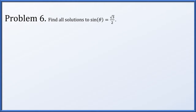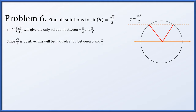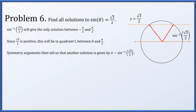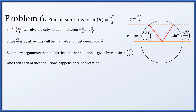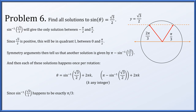In problem 6, we find all solutions to sine of theta equals root 3 over 2. The unit circle shows two angles with this sine value. Taking arc sine gives the quadrant 1 solution: arc sin(root 3 over 2). By symmetry, pi minus arc sin(root 3 over 2) is the quadrant 2 solution. Each repeats every full rotation, so the general solutions are arc sin(root 3 over 2) plus 2 pi k and pi minus arc sin(root 3 over 2) plus 2 pi k. Since arc sin(root 3 over 2) equals pi over 3, these simplify to pi over 3 plus 2 pi k and 2 pi over 3 plus 2 pi k, though expressing in terms of arc sine is also acceptable.